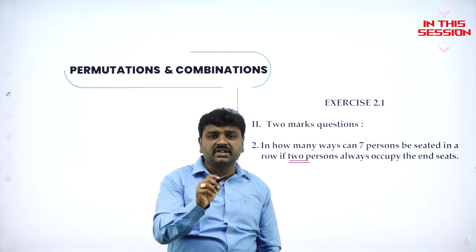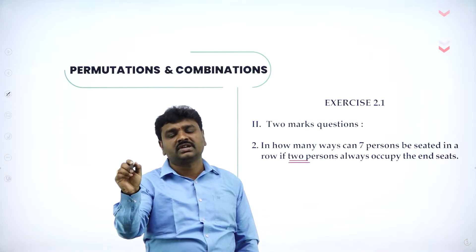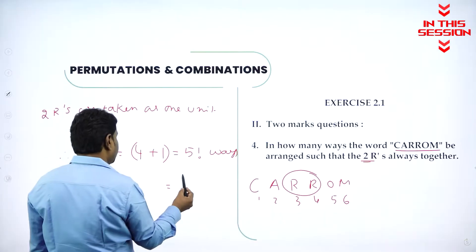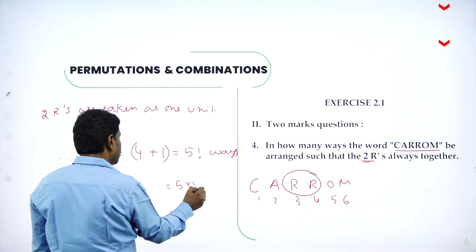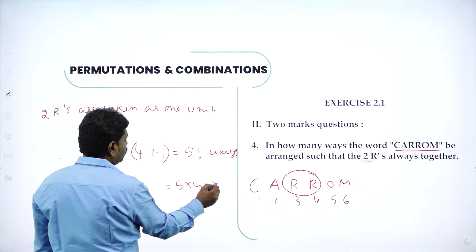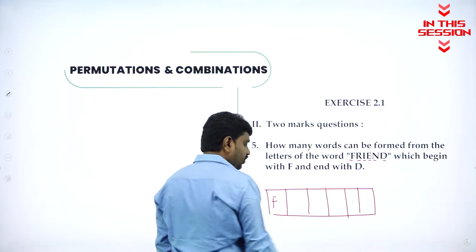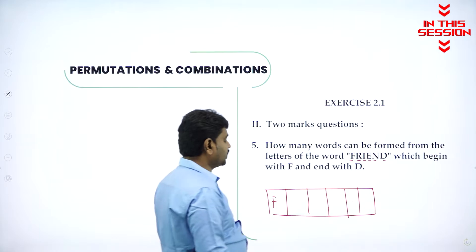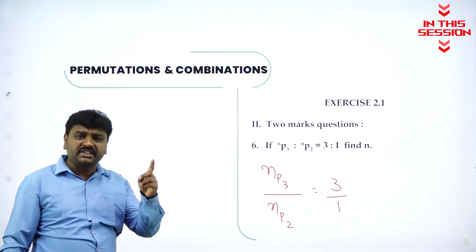Seven persons can be arranged in seven factorial ways. But two places are fixed. And five factorial means five into four into three... six letters can be arranged in six factorial ways. But first it should start with F and end with D.